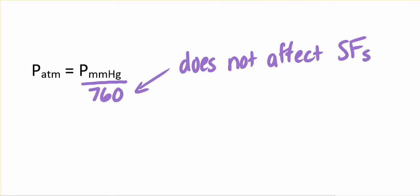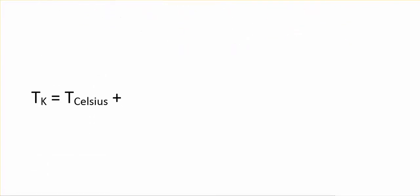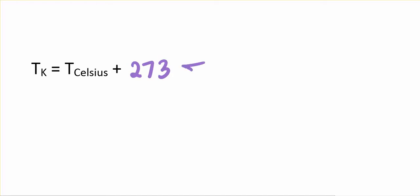If you have four significant figures in your millimeters of mercury pressure, then you will have four in your atmospheres of pressure. You've probably seen this one before: to go from Celsius temperature to a Kelvin temperature you're going to add 273. This 273 can affect significant figures, it's not exact. As long as the temperature that you're using here doesn't go beyond the ones place, 273 is good enough for my lecture, my quizzes, my exams.